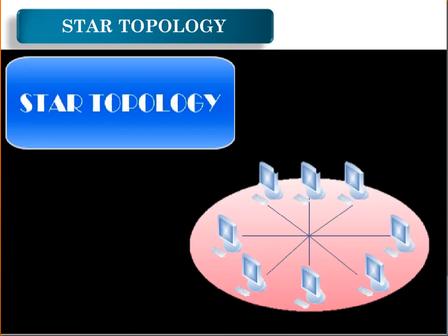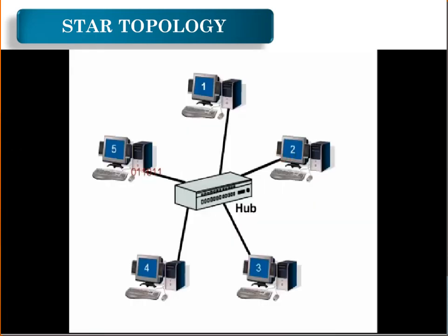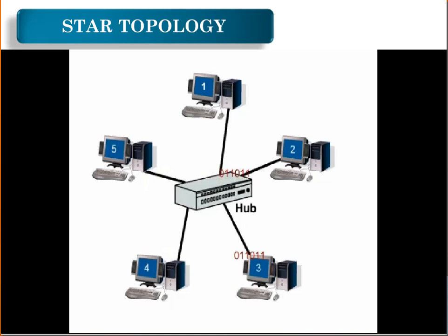Star topology — a star topology is one where each of the devices and computers on a network connect to a central hub. A major disadvantage of this network topology is that if the central hub fails, all computers connected to that hub would be disconnected.